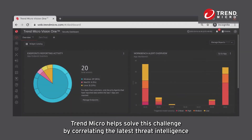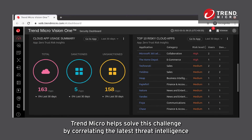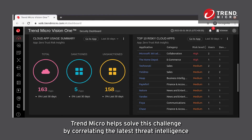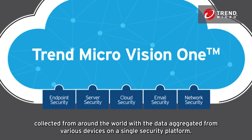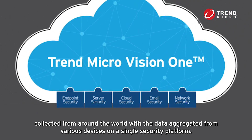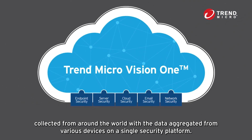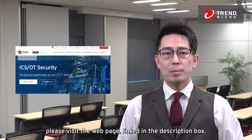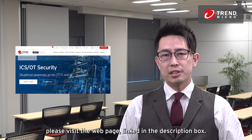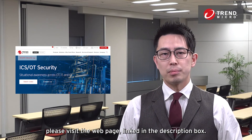Trend Micro helps solve this challenge by correlating the latest threat intelligence collected from around the world with the data aggregated from various devices on a single security platform. For more information on our solution, please visit the webpage linked in the description box.